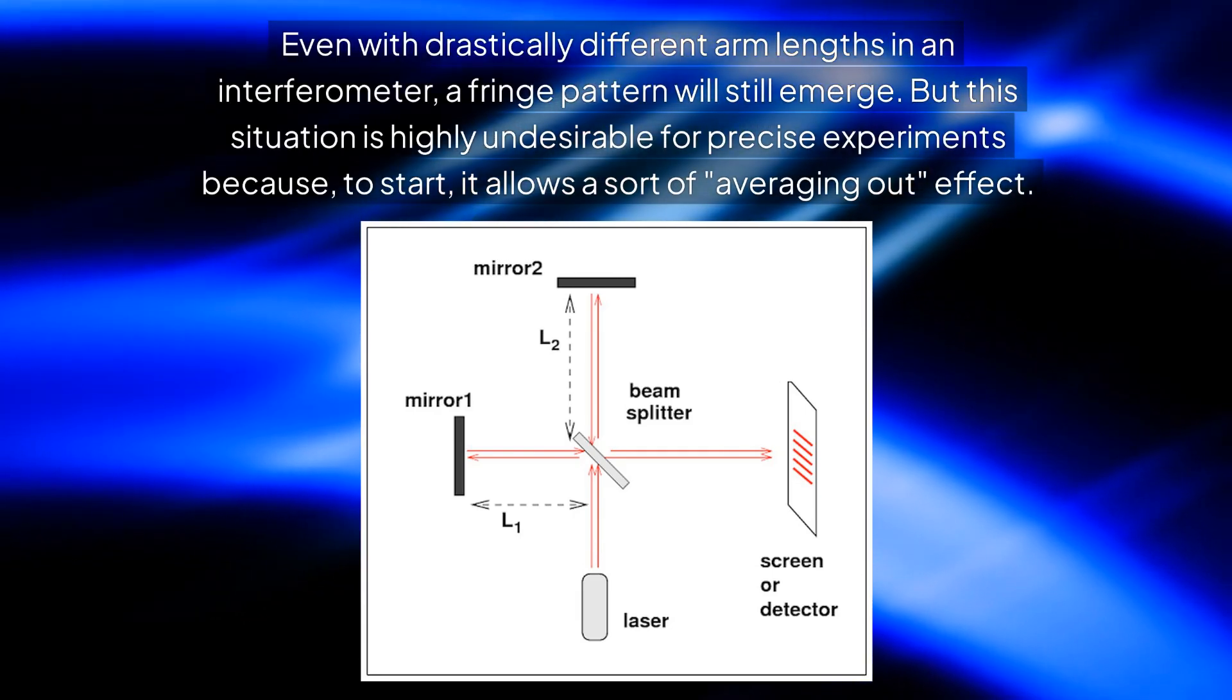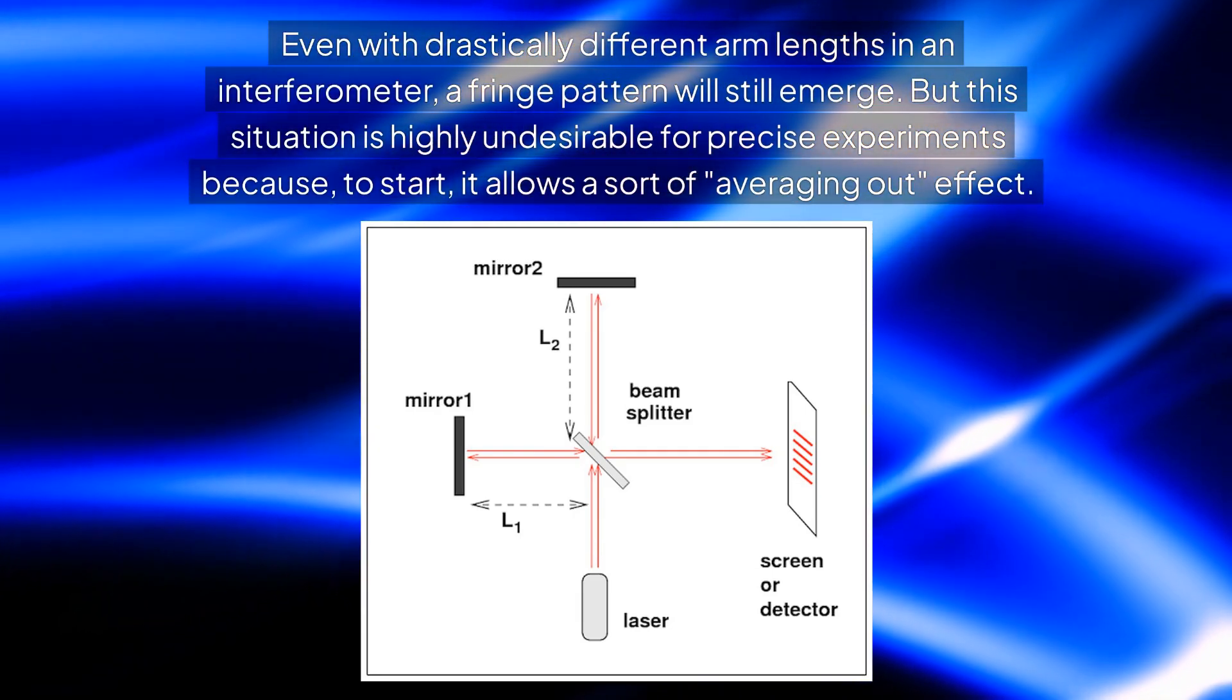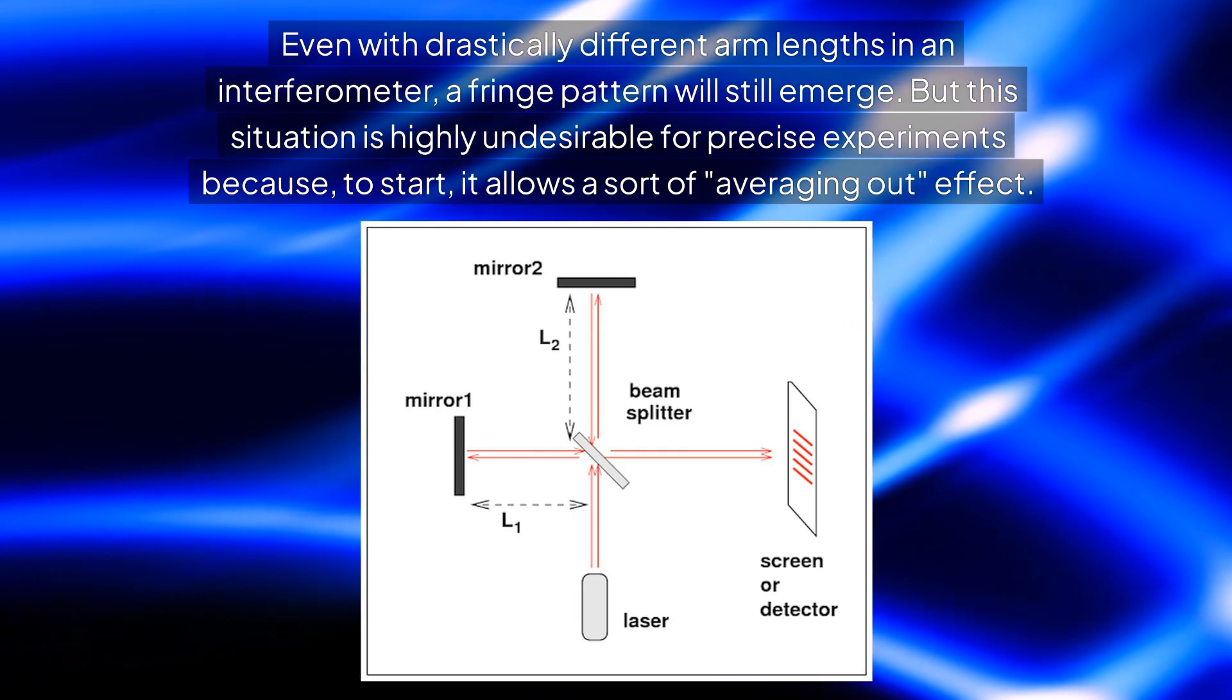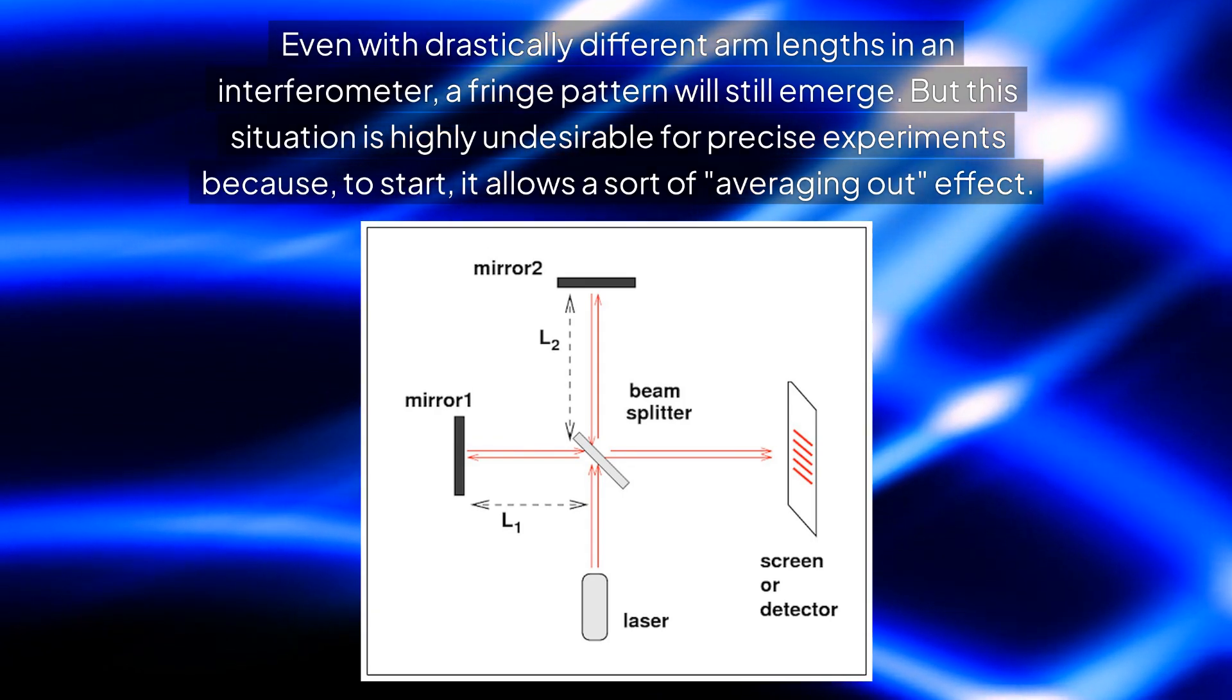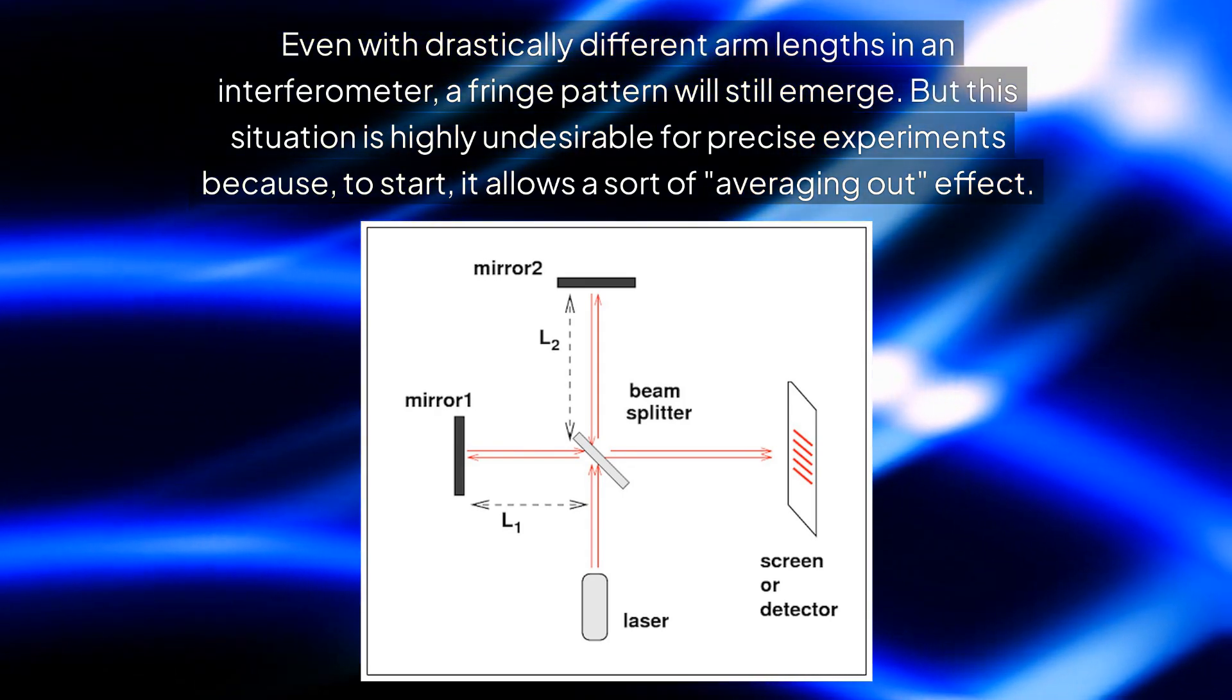Even with drastically different arm lengths in an interferometer, a fringe pattern will still emerge. But this situation is highly undesirable for precise experiments because to start, it allows a sort of averaging out effect.